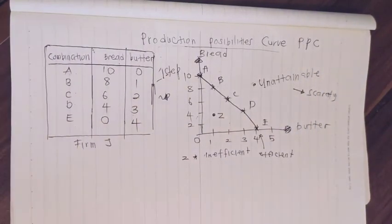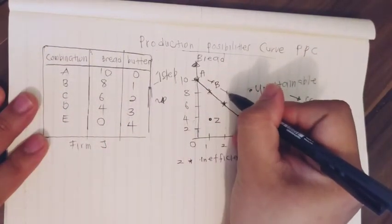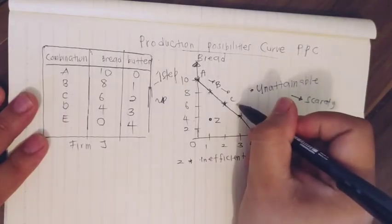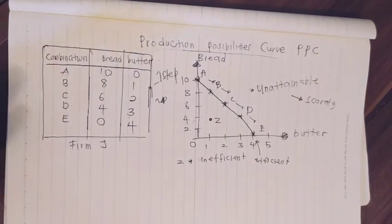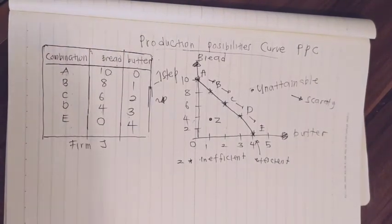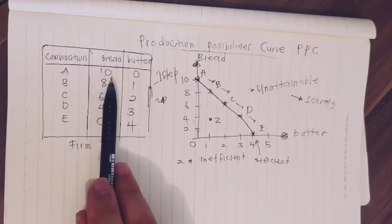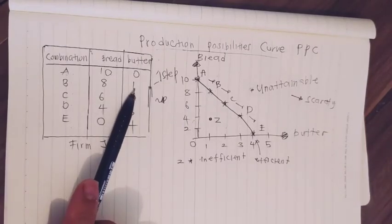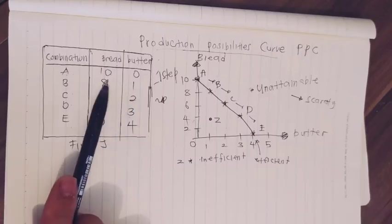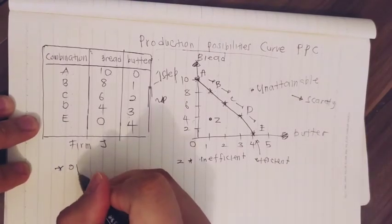Movement along the curve — from A to B, B to C, C to D, D to E — represents choices that can be made. For example, if the initial production is A, where the firm produces ten bread and no butter, but Firm J wants to produce one butter, they need to give up some bread. We call that opportunity cost.